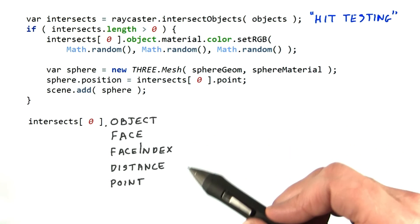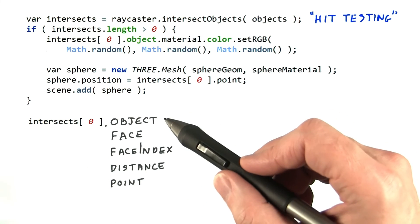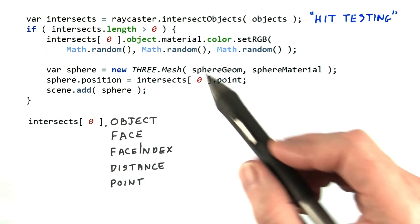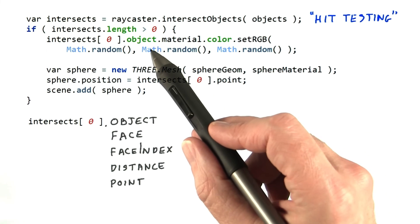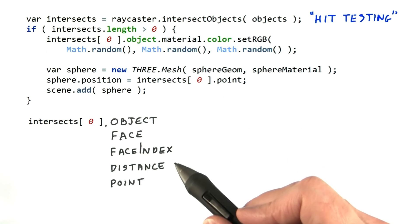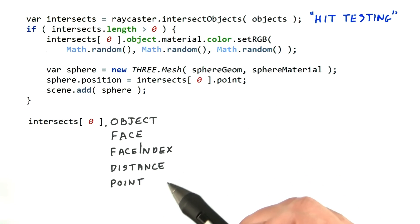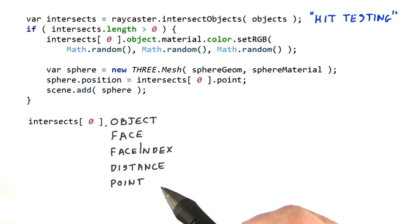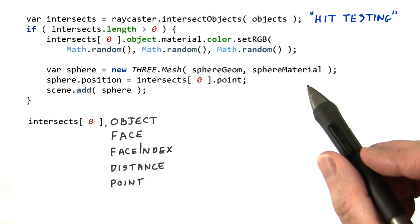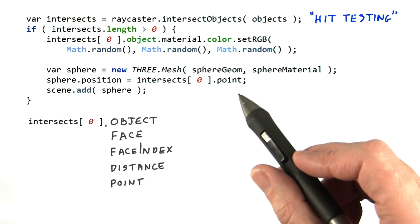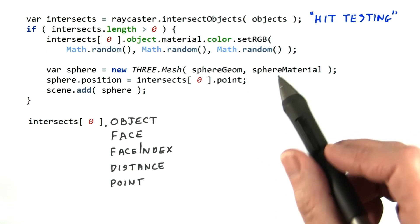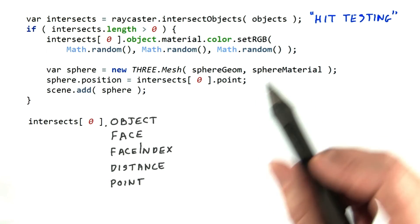This first intersection has information about what the ray hit, including the object, face, and the face's index in the object. We use the object parameter in the next line to change the material to a random color. The intersects record also includes the distance and the point in world space. To show where the object was hit, we add a small sphere to the scene using this intersection point for its location. These are just examples — you can do whatever you like with the intersection information you get back.